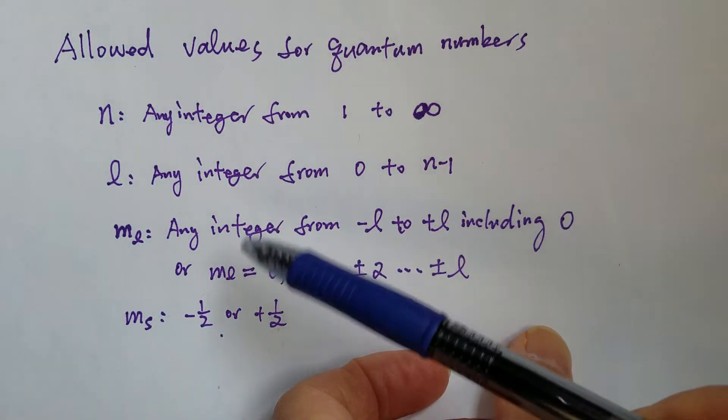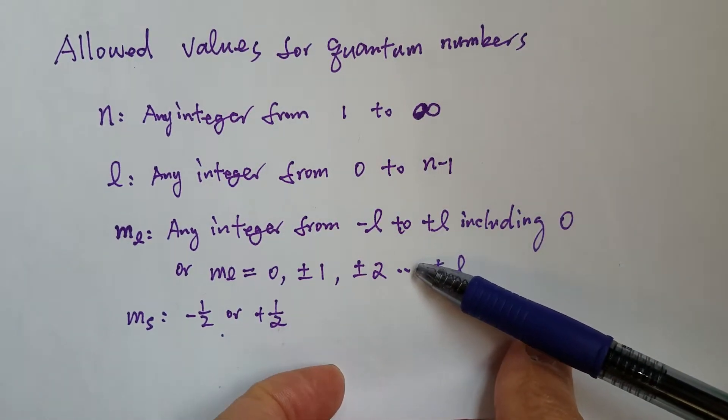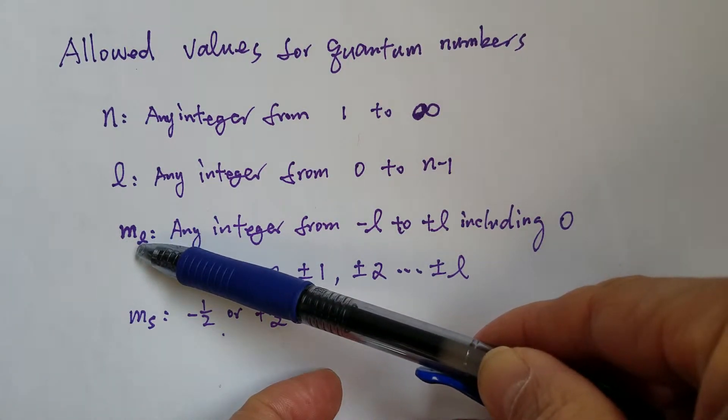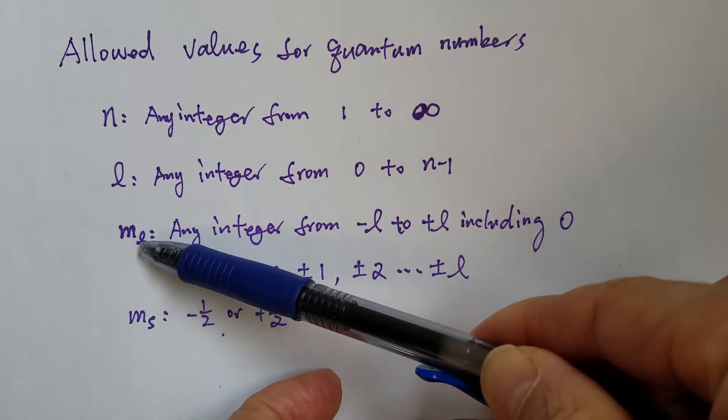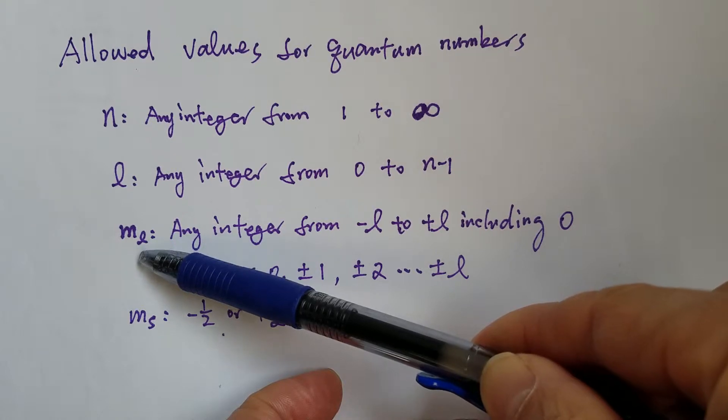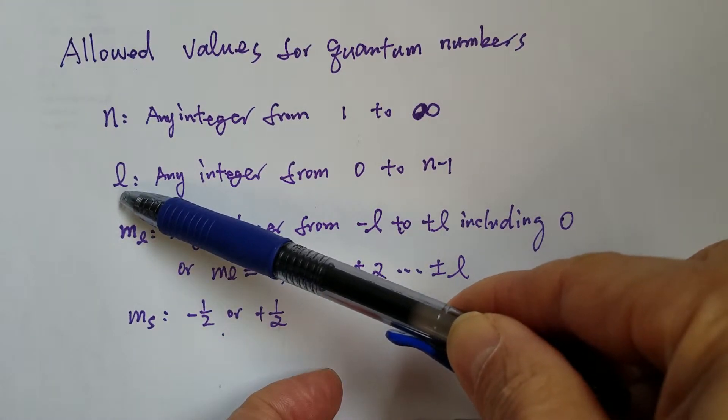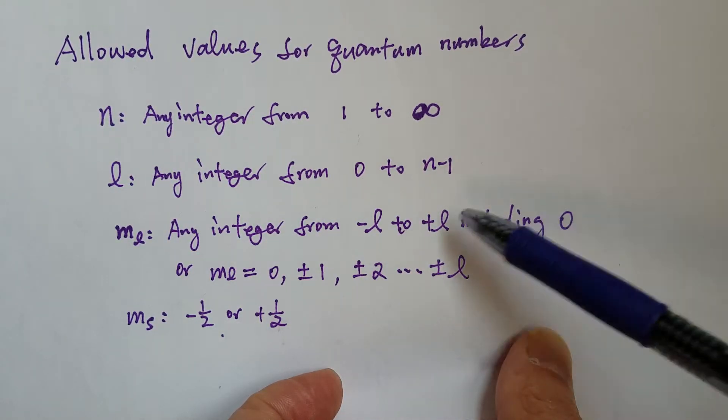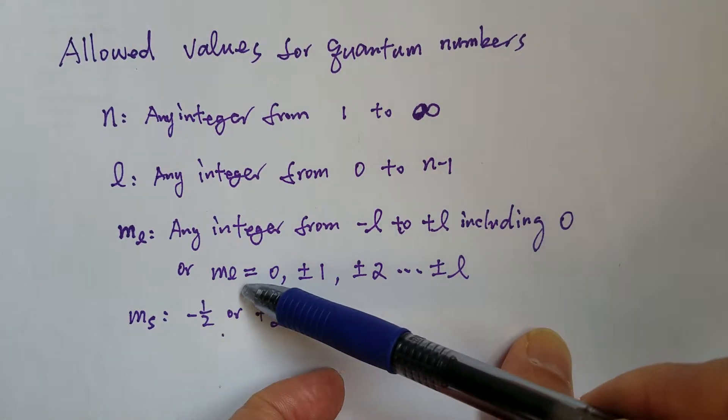So we already learned the number of orbitals can be determined by the number of ML values. And of course, the value of ML is determined by L. So there are two different ways to write the ML values.